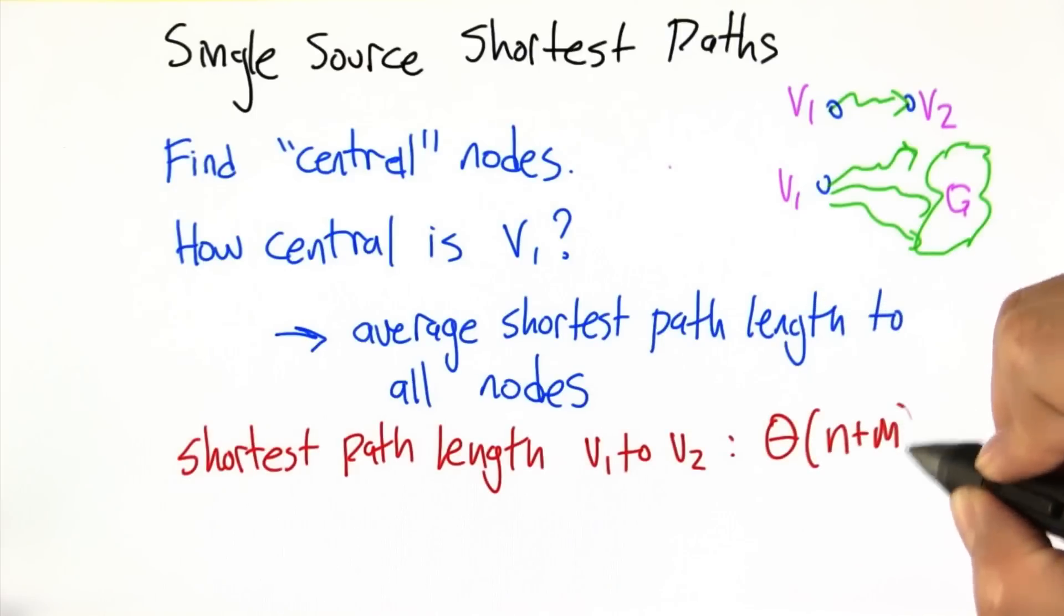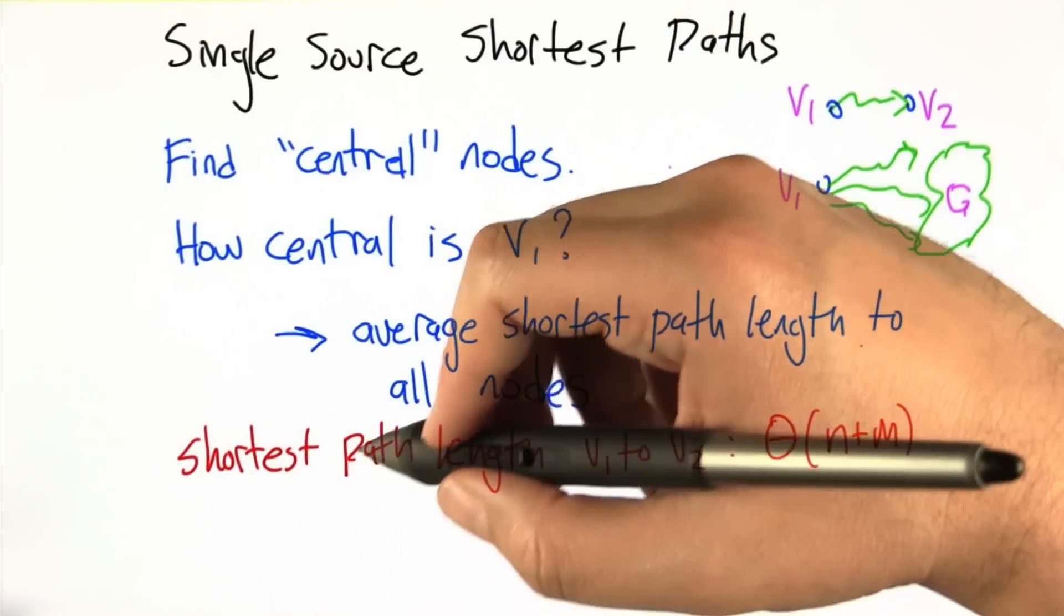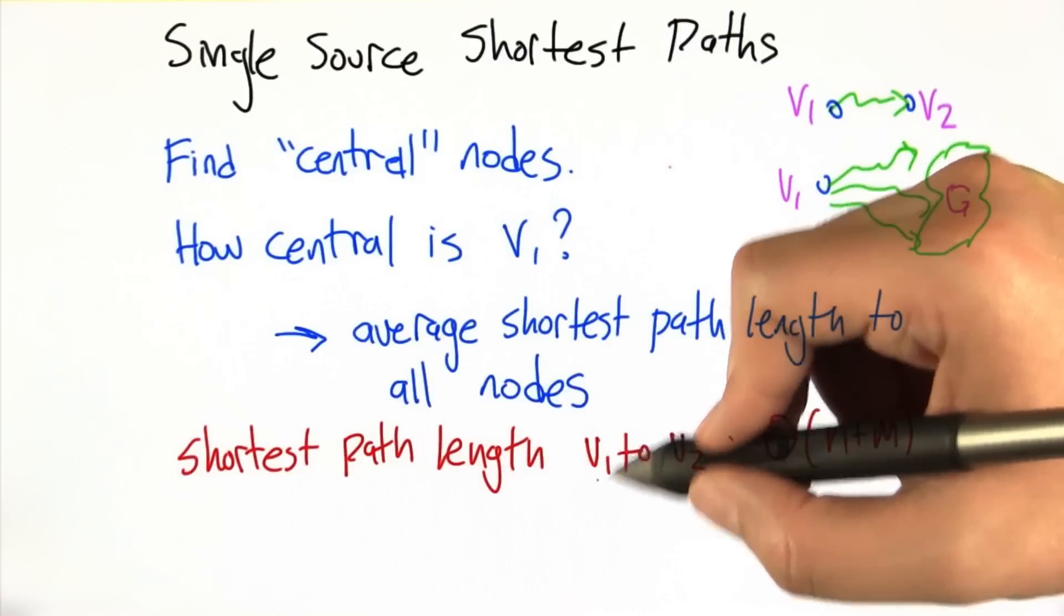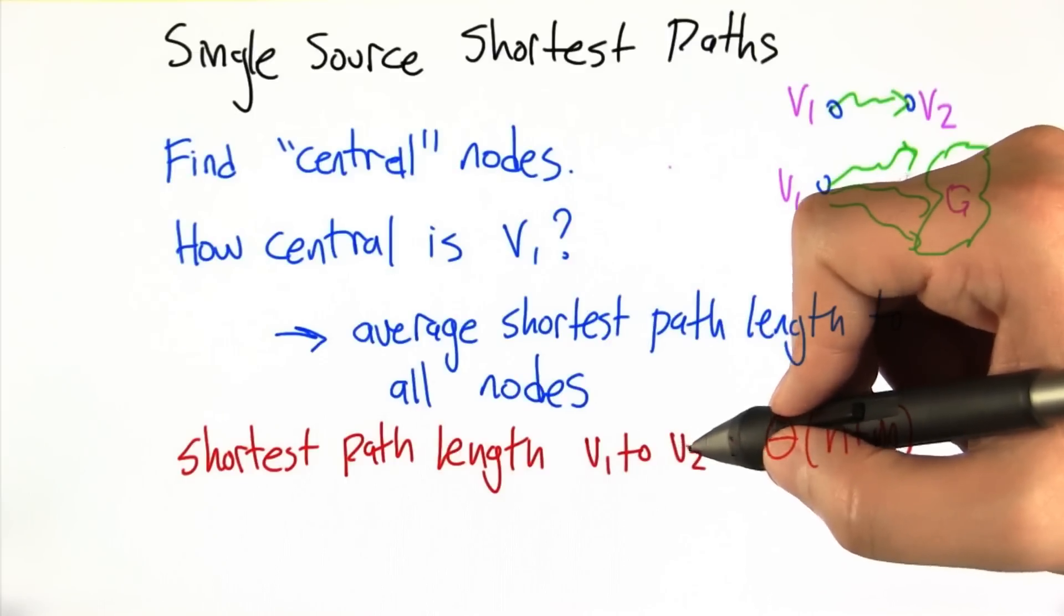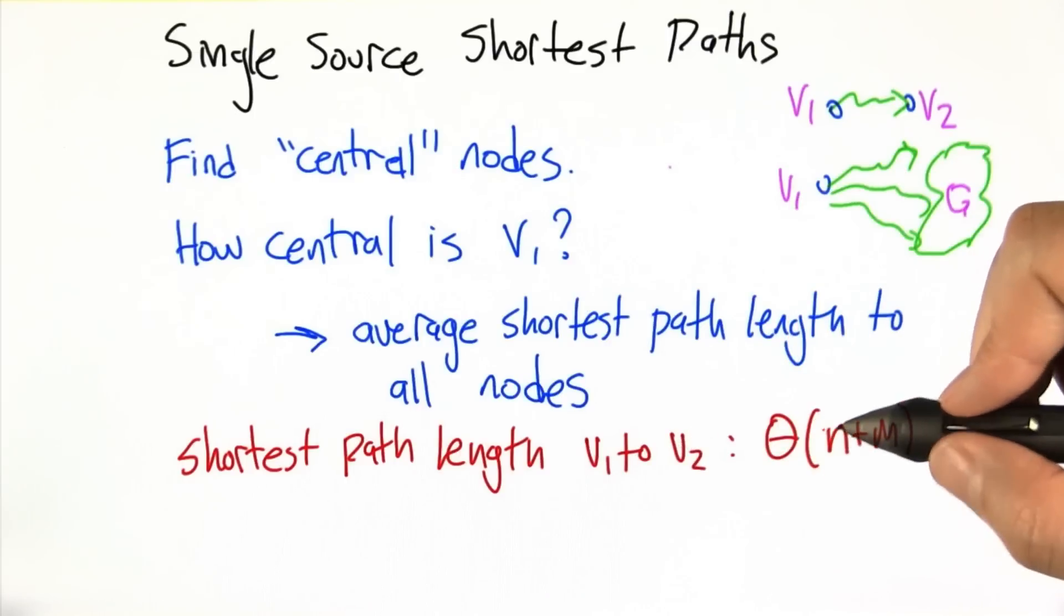Now, based on the analyses we've done so far, finding the shortest path length from some node V1 to some other specific node V2 takes time big theta of N plus M, the nodes plus edges.